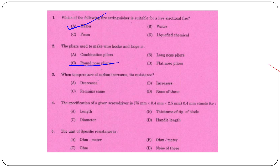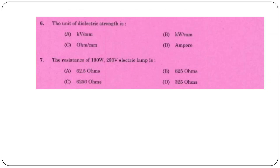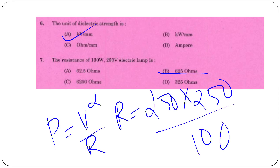Round nose pliers. When the temperature of carbon decreases — specification of a given screwdriver: 75mm, 0.4mm blade thickness. Specific resistance unit: 1.0mm. Unit of resistivity 1.0mm. Resistance of a 100W, 250V electric lamp: 625 ohm — using the formula P = V²/R, so R = 250²/100 = 625 ohm.